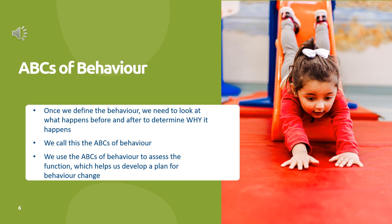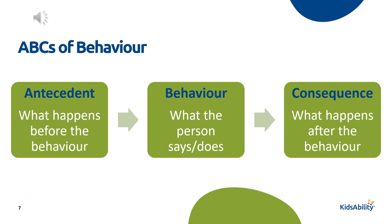We call this the ABCs of behavior. The A stands for antecedent — what happens immediately before the behavior. The B is the behavior itself, so what the person says or does. The C is the consequence — what's happening immediately after the behavior is occurring. If we understand what happens before — the antecedent that triggers the behavior — we can use preventative strategies to help problem behaviors from occurring. Looking at the consequence helps us understand what is maintaining or reinforcing the behavior, which is essential for reducing it.